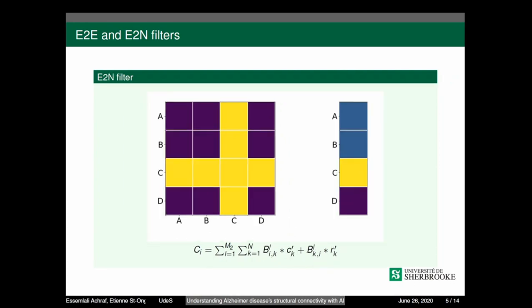Meanwhile, the edge-to-node filter reduces the dimensionality of data and plays the same role as pooling in classical CNN. The main difference between our version and the original BrainNet CNN is we omitted the application of node-to-graph and we adapted the edge-to-node filter to be applied just over the rows instead of the rows and the columns.